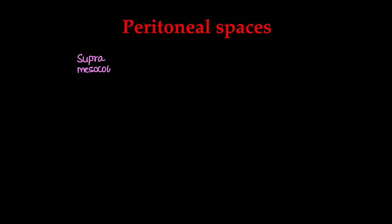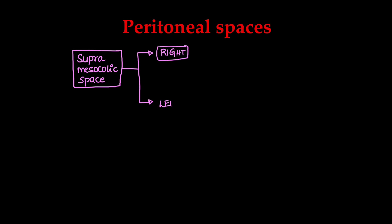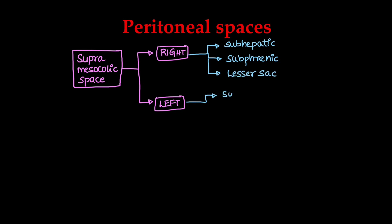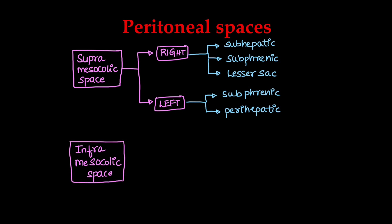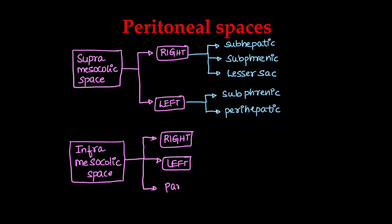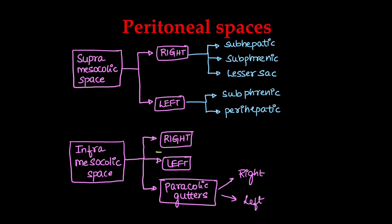Above the transverse mesocolon, the supramesocolic space is divided into right and left. On the right side we have the right subhepatic space, right subphrenic space and the lesser sac. On the left side we have the left subphrenic space and the perihepatic space. In the inframesocolic compartment, right and left sides are divided by the small bowel mesentery. We also have the paracolic gutters on the right and left sides along the ascending and descending colon.